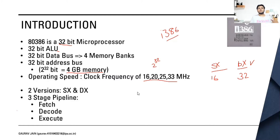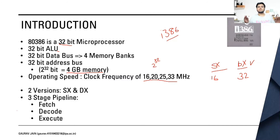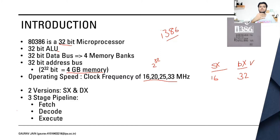The I386 processor had a three-stage pipeline: fetch, decode, and execute. These three pipeline stages can run in parallel. For example, while one instruction is being executed, another is being decoded, and yet another is being fetched at the same time. This is what is meant by a three-stage pipeline.